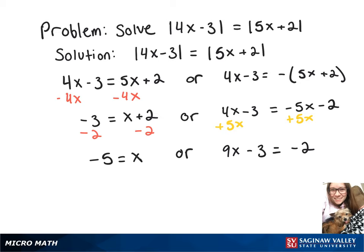Now we're going to add 3 to both sides. So we've got 9x equals 1. Now all we have to do is divide by that 9, and that's going to give us our other answer of x equals 1 over 9.